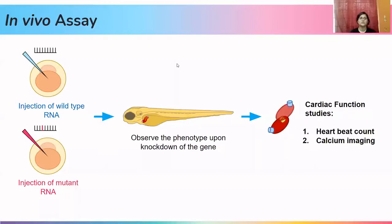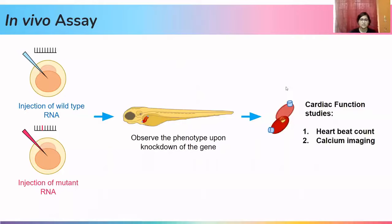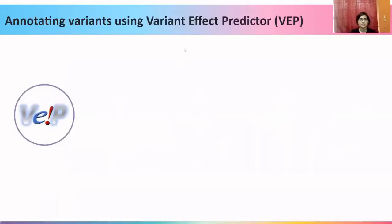Let us look at another type of assay present in the literature: the in vivo assay, where the variant is introduced into a model organism and the phenotype upon knockdown is then observed. The phenotype depends on what type of variant it is and what type of change it is supposed to bring about.